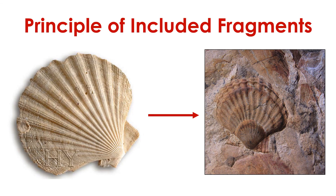A related principle is called the principle of included fragments. According to this principle, if a rock contains a fragment of something — like another rock or fossil — then the rock must be younger than the fragment it includes. Think about how a fossil must form. Fossils come from organisms. Those organisms live, die, and are buried in sediment that ultimately becomes sedimentary rock. The organism must have lived before the sediment was deposited, so the fossil fragment must be older than the rock that surrounds it.